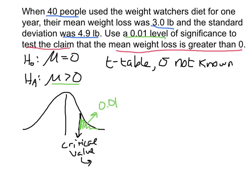In my T table, I'm looking up the value with a tail of .01 in one tail. The degrees of freedom is one less than our sample size — since our sample size is 40, that means our degrees of freedom are 39. So in table A3, with 39 degrees of freedom and area in one tail of .01, the critical value is 2.426.